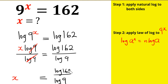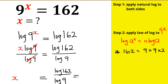What I'm going to do next is recognize that inside 162, the number 9 is present as a factor. So I'm going to split that clearly. I can say that 162 is just the same thing as 9 times 9 times 2, because 9 times 9 is 81, and 81 times 2 is 162. So this becomes log of (9 × 9 × 2) all over log 9.